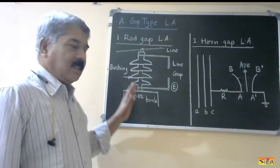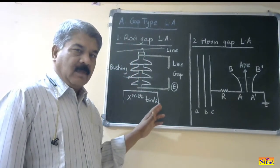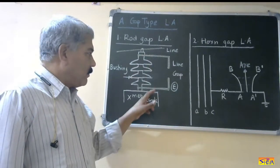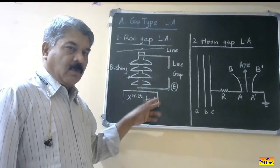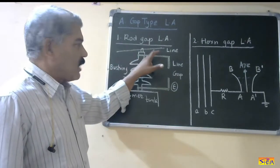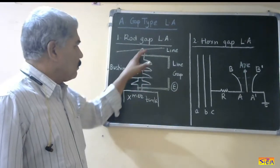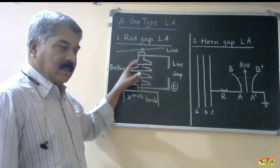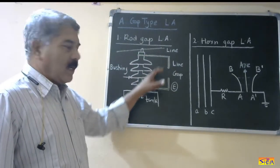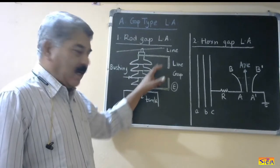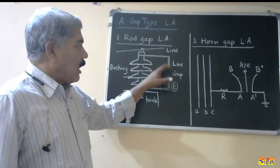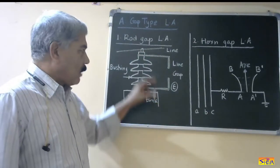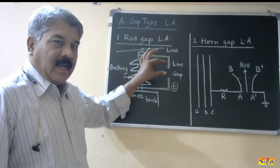The rod gap arrester is the simplest type of lightning arrester, which consists of two rods — number one connected to the line, and number two connected to the ground or earth. Here I have shown a transmission line connected to a transformer through a bushing. We are using a rod gap type lightning arrester to protect the transformer. The upper rod is connected to the line and the lower rod is connected to the ground.